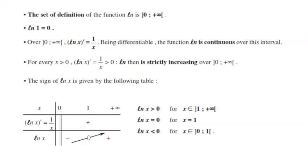First of all, we explained what the meaning of ln is, which is the logarithmic function. Ln is a positive function. Its domain is from 0 to plus infinity. You have to always know that ln(1) equals 0. From 0 to plus infinity, ln(x) is the primitive of 1 over x, so the derivative of ln(x) is 1 over x.